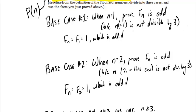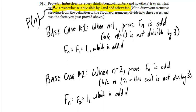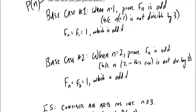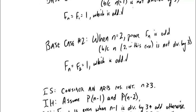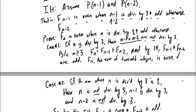Go back over this proof and think about how the recursive structure came just from the Fibonacci definition, giving the vast majority of the proof structure. What wasn't there came from carefully stating everything known and everything needed to prove. The last piece was recognizing that dividing into cases was useful — looking at the structure of the 'and' in the predicate — and having the previously proved even/odd addition theorems available.